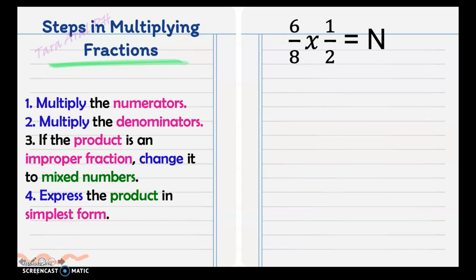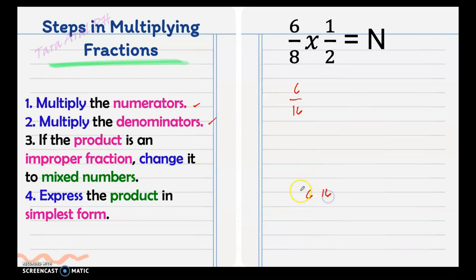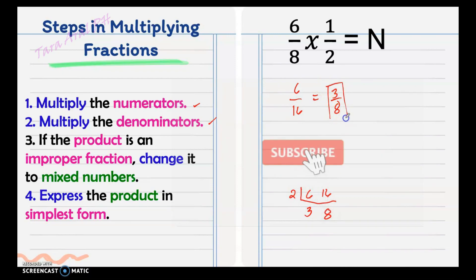And lastly, express the product in simplest form. We have an example: 6a times 1 half. So you multiply the numerators — we have 6. Then multiply the denominators: 8 times 2 is 16. Then, if the product is an improper fraction, change it into a mixed number. As you can see, it's a proper fraction because the numerator is smaller than the denominator. But it has a common factor between 6 and 16, so we need to get the lowest term using the continuous division method. Their common factor is 2, so we have 3 and 8. There's no common factor, so our final answer is 3/8.